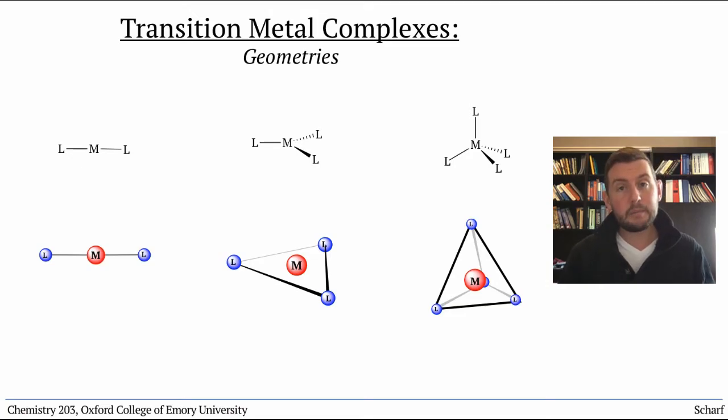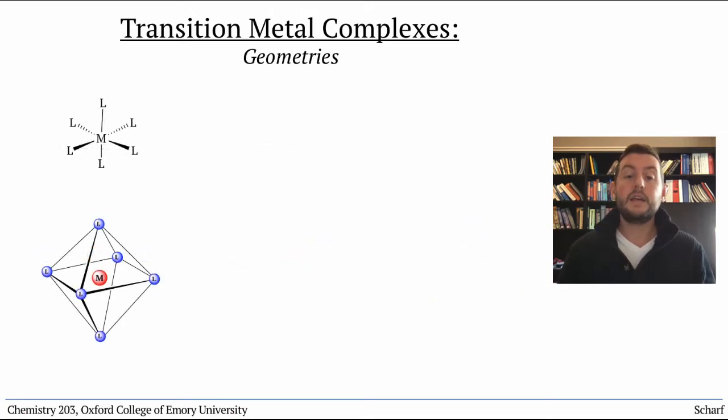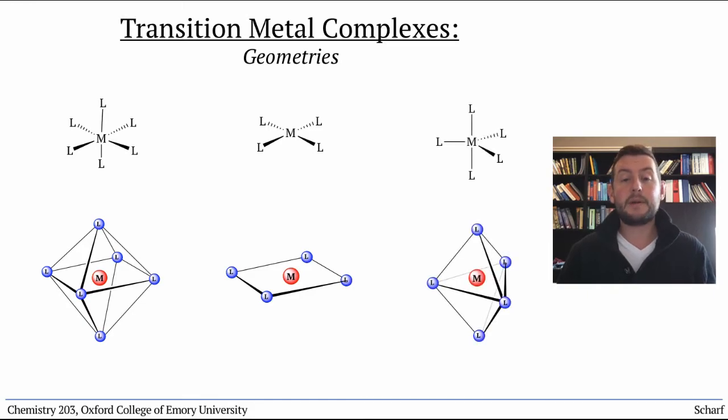Among the most common are octahedral, in which six ligands bind like this, two along each axis. Square planar, in which four ligands arrange themselves 90 degrees apart from each other in the xy plane. And trigonal bipyramidal, in which two ligands are 180 degrees apart on the z-axis, and the other three ligands are all in the xy plane, 120 degrees from each other.